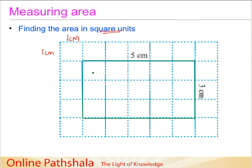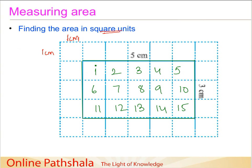What we essentially do is simply count the number of square units enclosed by this figure. So in this case we have 1, 2, 3, 4, 5, 7, 8, 9, 10, 11, 12, 13, 14 and 15. Or in simple words, you can just count the number of columns and multiply it by the number of rows, which is going to be 5 times 3 equals 15 square units.